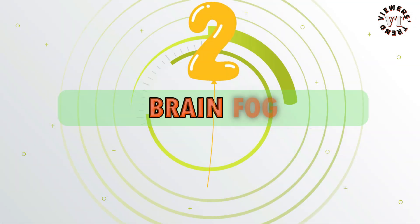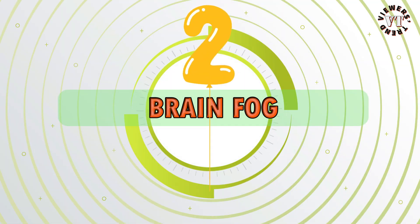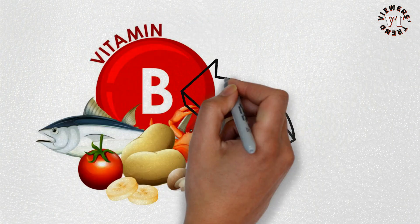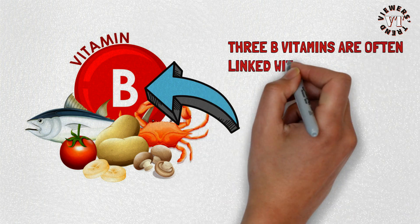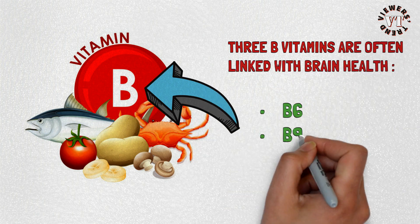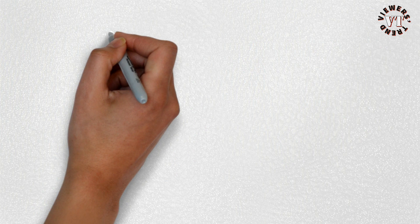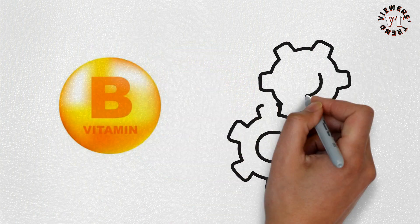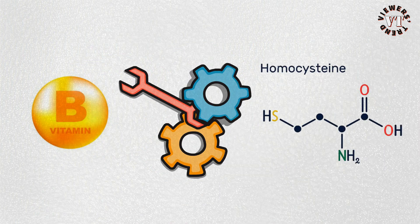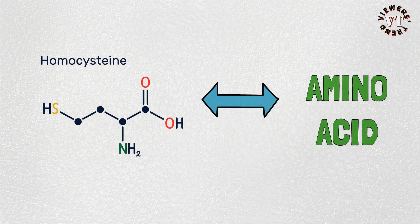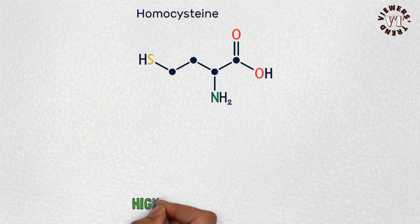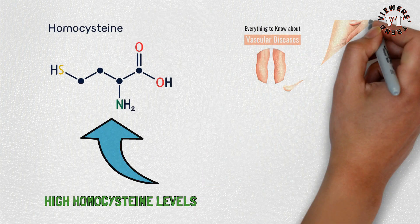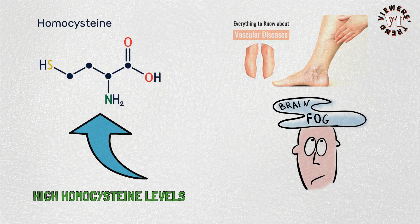2. Brain Fog. We need B vitamins for healthy nerve and brain function. Three B vitamins are often linked with brain health: B6, B9 (folate), and B12. These B vitamins help to break down homocysteine. Homocysteine is an amino acid; however, it has been found to contribute to poor health. High homocysteine levels cause vascular disease and brain fog by elevating oxidative stress. You can easily get enough B vitamins through diet, so you don't need to supplement.